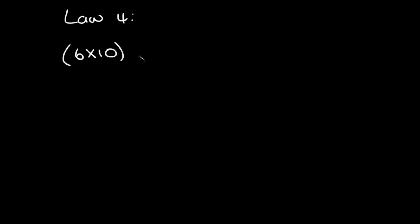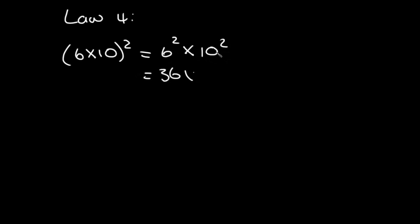Now looking at Law 4. We're given (6 times 10) squared. The important thing with the fourth law is that when we have a product raised to a power, each term inside the bracket gets squared. So it becomes six squared times ten squared. Six squared is 36, ten squared is 100, and 36 times 100 gives a final answer of 3600.